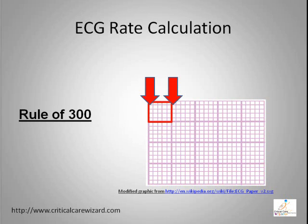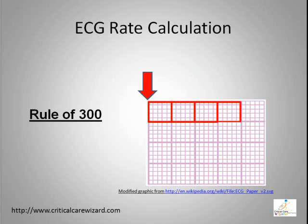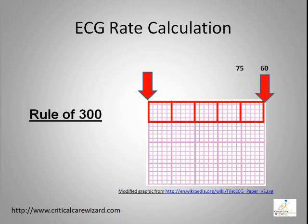If two ECG waves fall in one big box, heart rate is between 200 to 300 per minute. If two ECG waves fall in two big boxes, heart rate is between 150 to 200 per minute. If two ECG waves fall in three big boxes, heart rate is between 100 to 150 per minute. If two ECG waves fall in four big boxes, heart rate is between 75 to 100 per minute. If two ECG waves fall in five big boxes, heart rate is between 60 and 75 per minute.